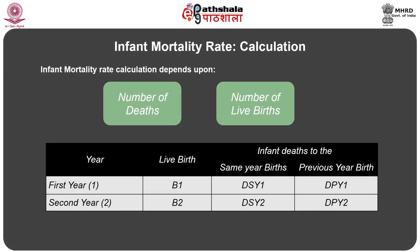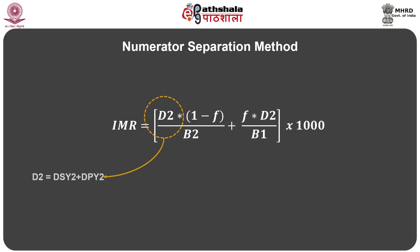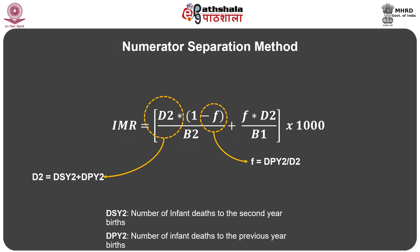Infant mortality rate calculation depends upon: (a) number of deaths and (b) number of live births in that calendar year. The numerator separation method formula is: IMR equals D2 multiplied by (1 minus F), divided by B2 plus F multiplied by D2 divided by B1, whole multiplied by 1000. Where D2 equals DSY2 plus DPY2, and F equals DPY2 divided by D2. DSY2 is the number of infant deaths from second-year births; DPY2 is the number of infant deaths from the previous year of birth.